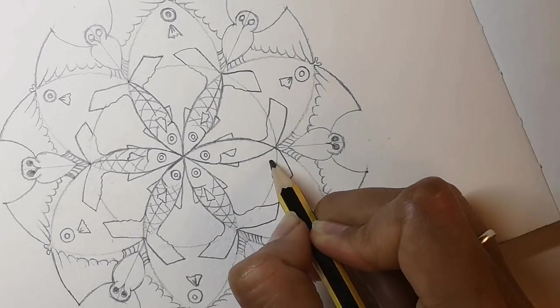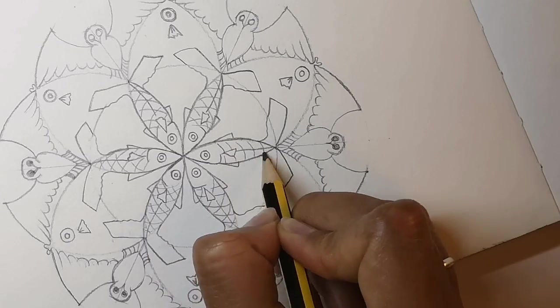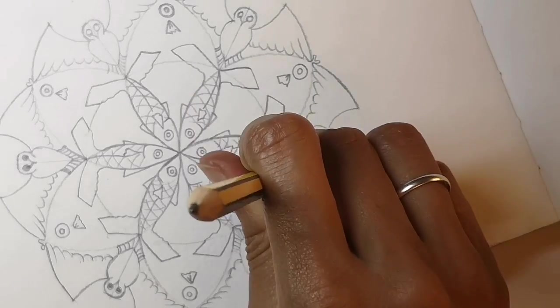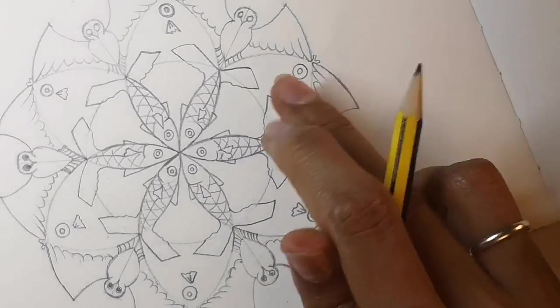And then curving in the tail and the pattern. Curved lines to show the fishy scales. Rub off any of the circles that go over the fish.